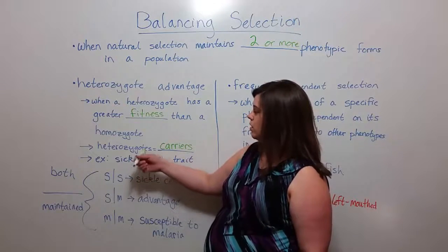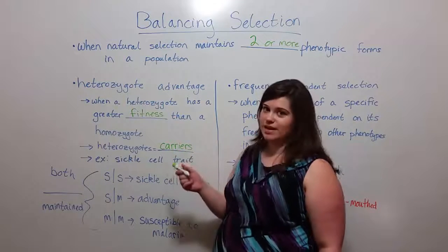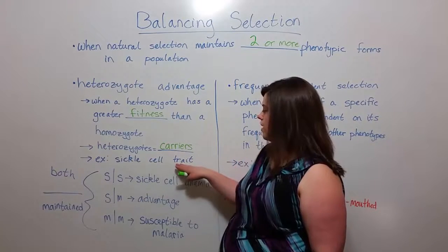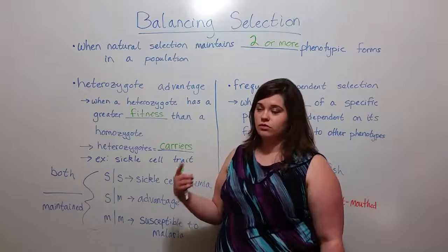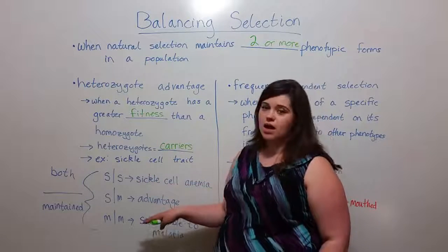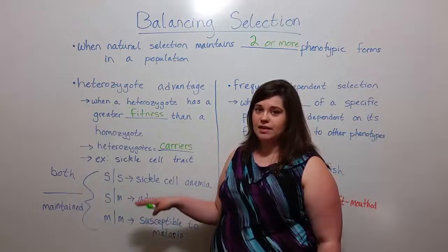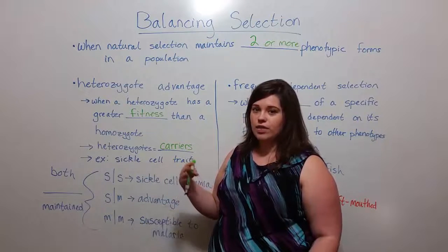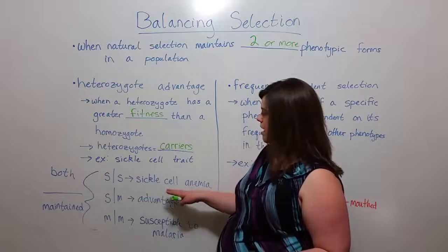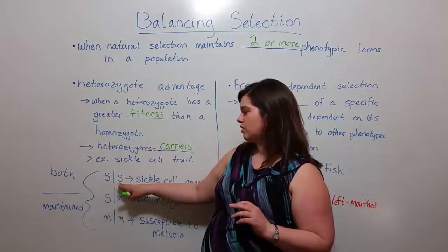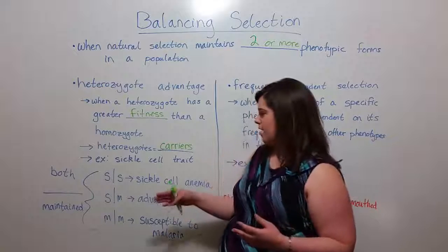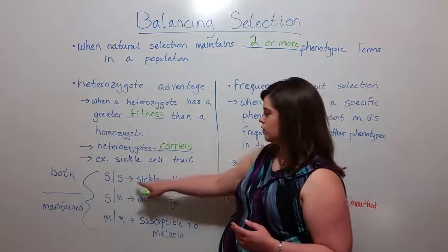We see an example of both heterozygote advantage and heterozygotes being carriers in the disease sickle cell anemia. Sickle cell trait means having one allele for sickle cell anemia and one regular allele. We're talking about alleles for a specific polypeptide in hemoglobin — when the diseased polypeptide is present, you have sickle cell anemia. People who have two alleles for sickle cell trait, meaning two alleles for that incorrect hemoglobin polypeptide, have sickle cell anemia — this is one type of homozygote.